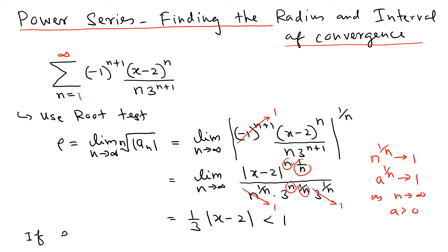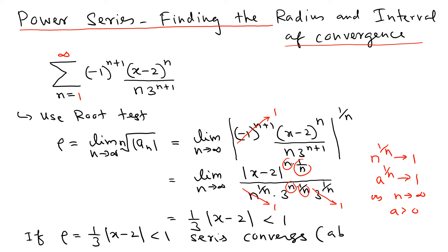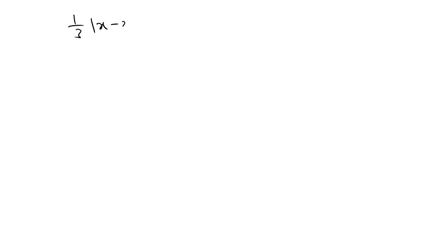So if rho, which is one-third times the absolute value of x minus 2, is less than 1, the series converges absolutely. Multiplying both sides by 3, this implies that the absolute value of x minus 2 is less than 3. That gives us the radius of convergence R equal to 3.